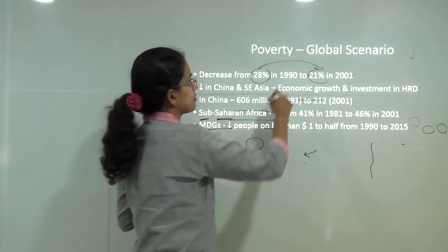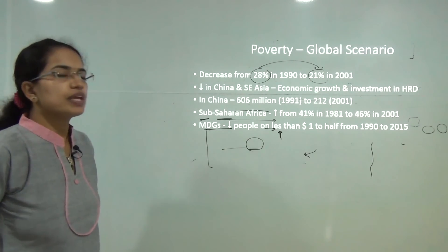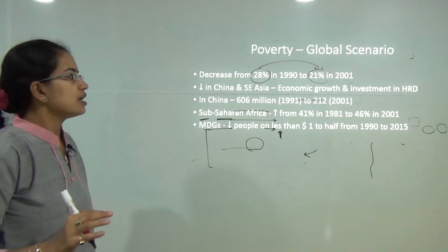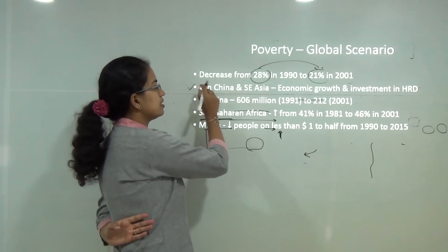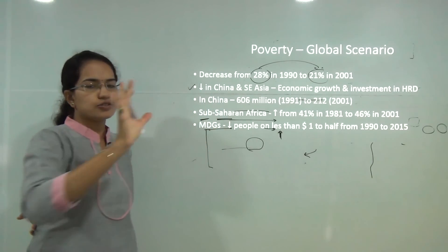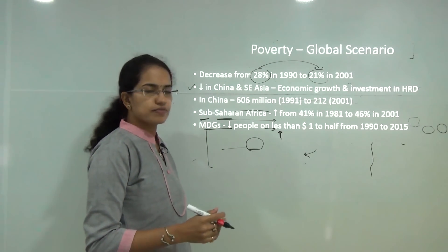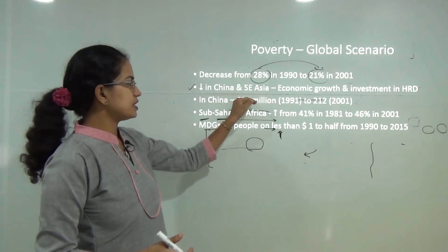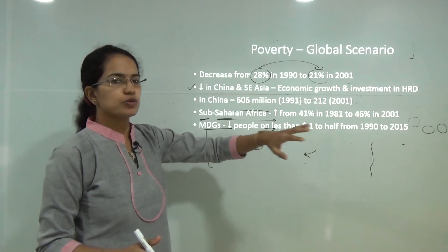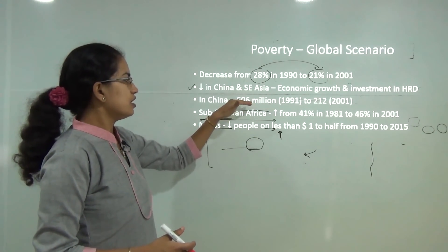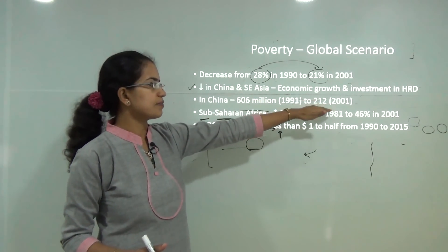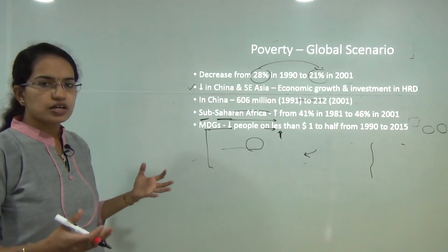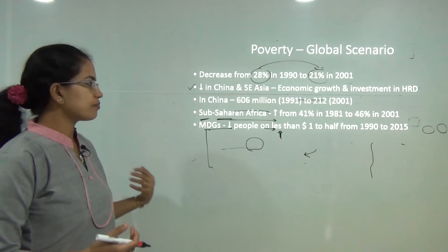Globally, poverty declined from 28% to nearly 21% in 2001. China and Southeast Asia were among the worst-affected regions, but are doing better due to economic growth and more investment in human resource development. In China alone, the number of poor declined by nearly two-thirds — from 600 million to nearly 200 million in 2001.